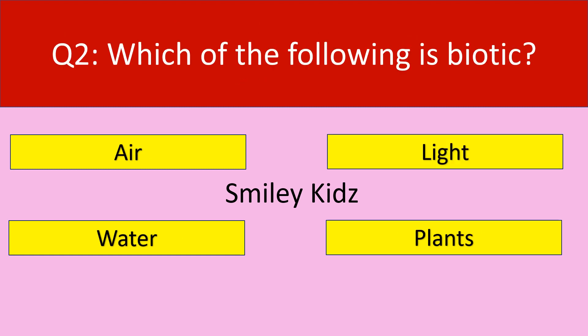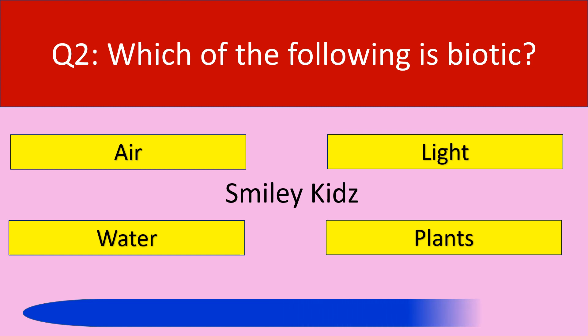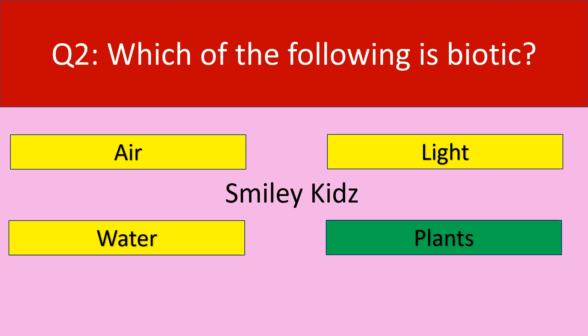Question number 2. Which of the following is biotic? Options are: air, light, water, plants. Your time starts now. Your time is up. The correct answer is plants.